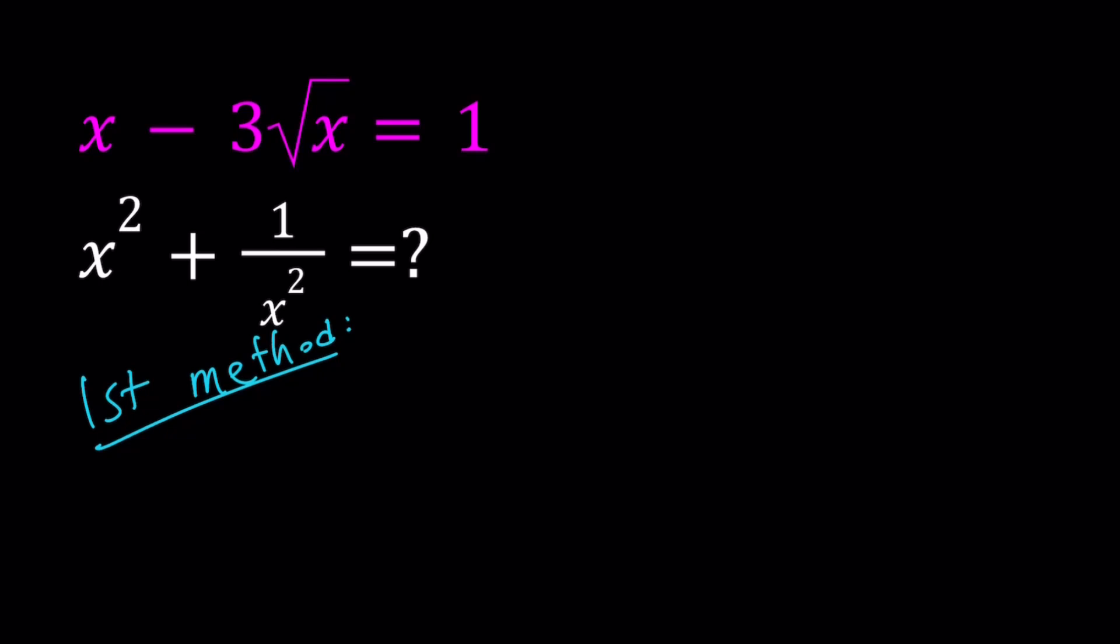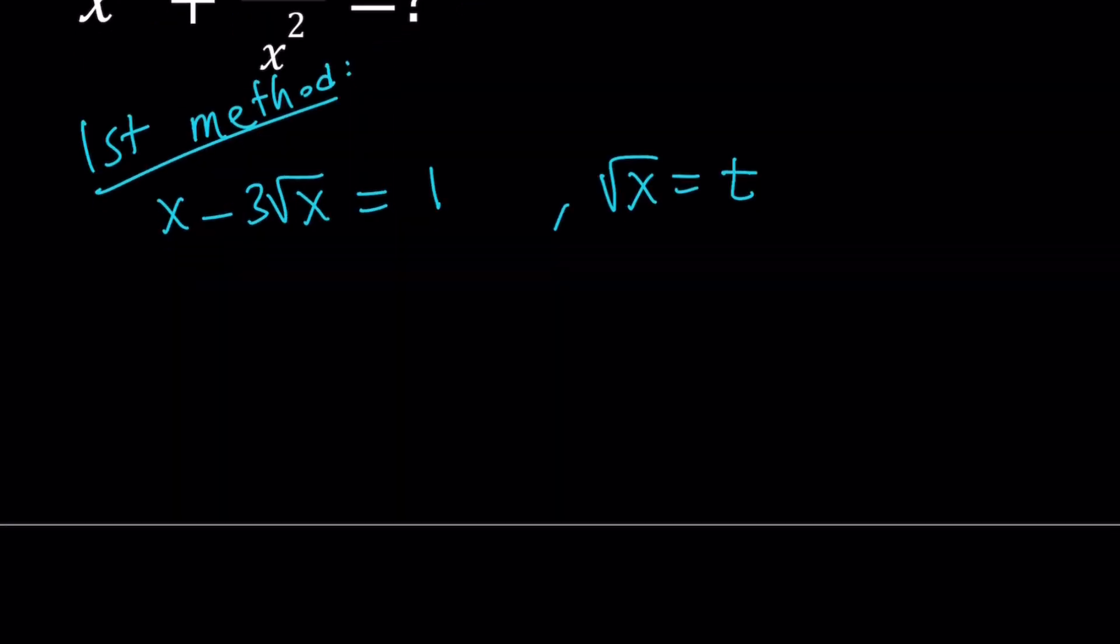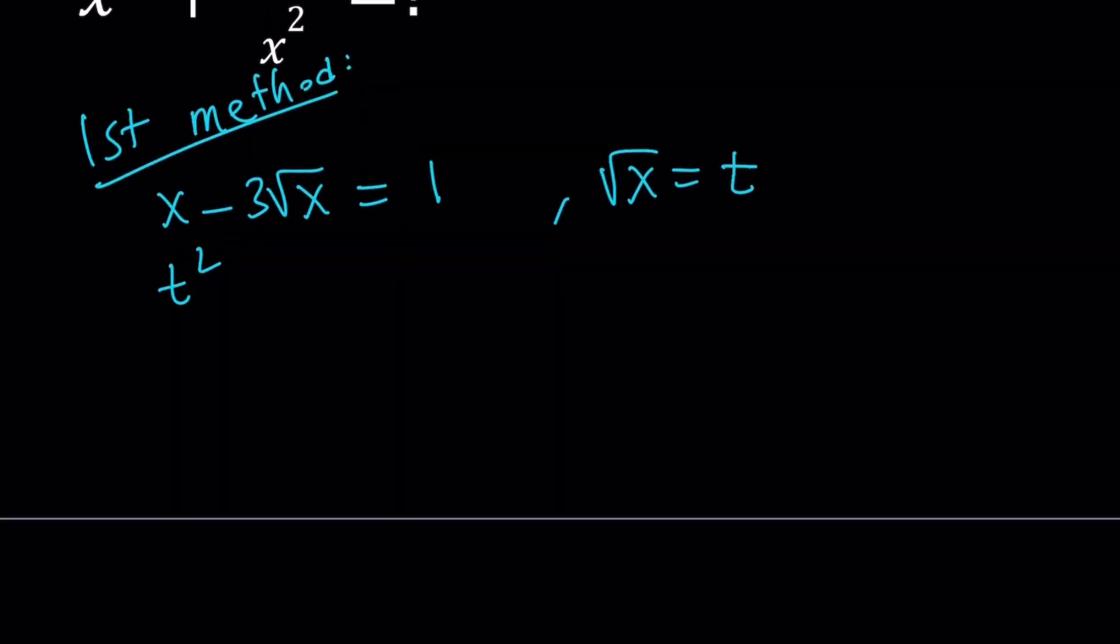For the first method, I'm going to solve the radical equation. So this is my equation, and I'm going to use substitution. So let's go ahead and call square root of x equal to t. So we can write this as t squared minus 3t minus 1 equals 0.